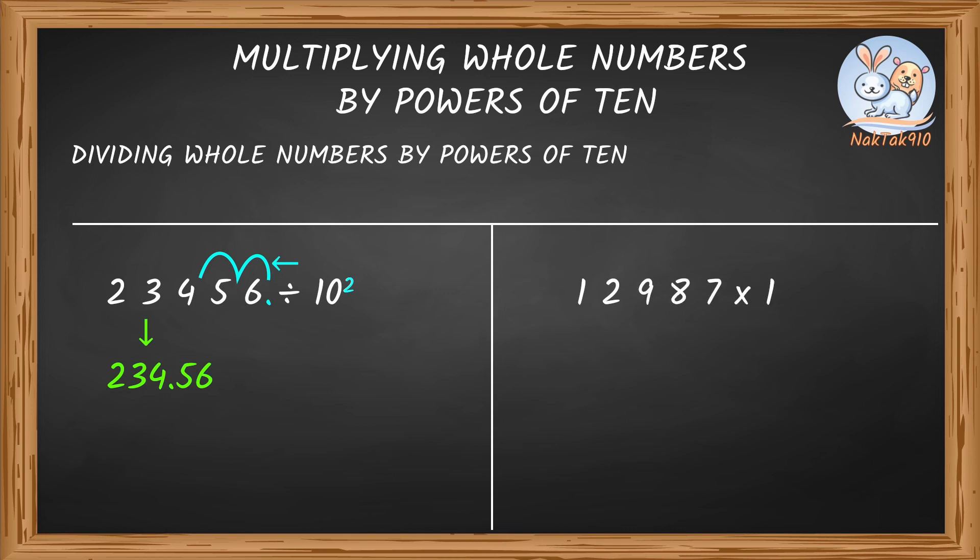Nack! Let me try some examples. In ten to the power of three, the power of ten is three. So, taking three jumps towards your left. We end up at 12.987.